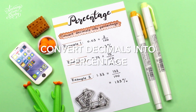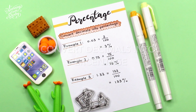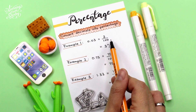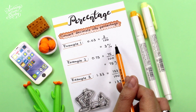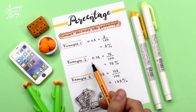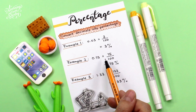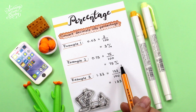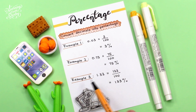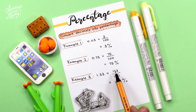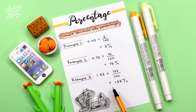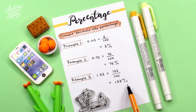How to convert decimals into percentage. Let's look at example one: 0.03 means 3 over 100, which is 3%. Let's look at example two: 0.75 means 75 over 100, which is 75%. Let's look at example three: 1.33 means 133 over 100, which is 133%.